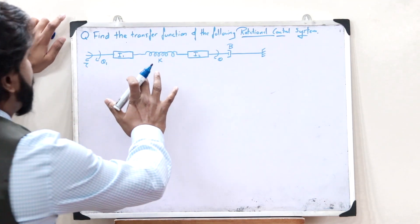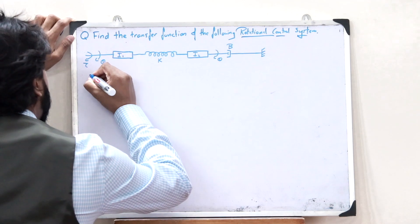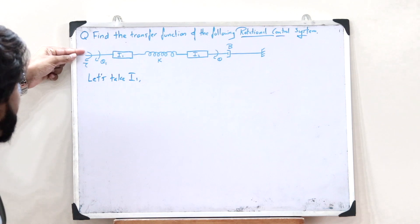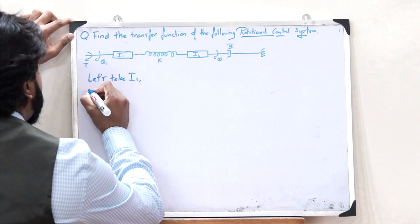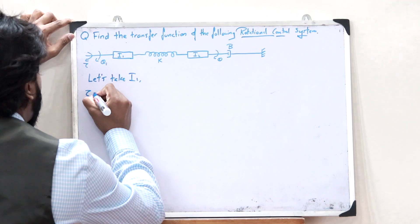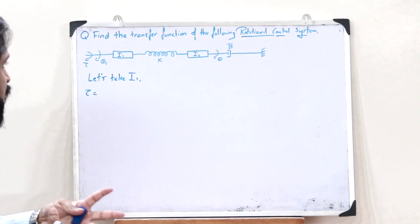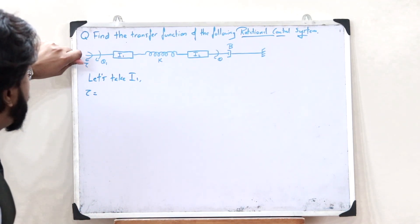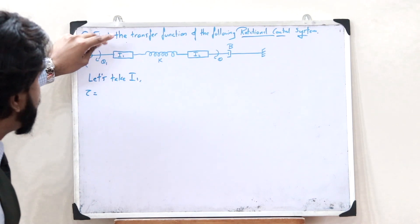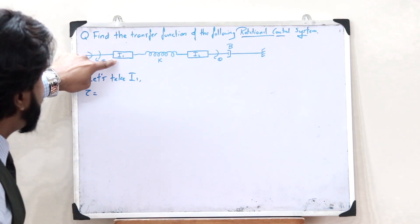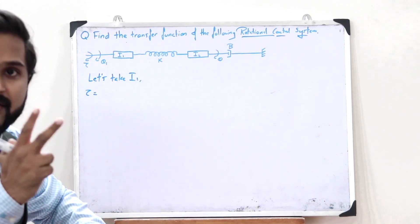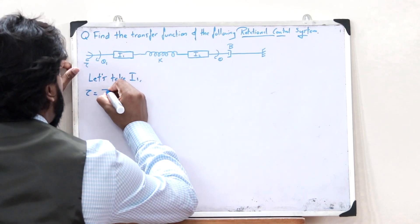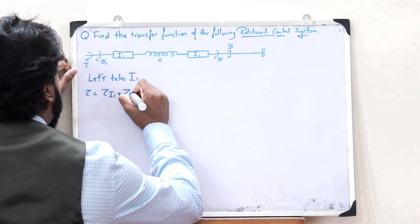First, let us consider this particular moment of inertia I1. In the case of I1, what we observe is that we have provided an external torque T. Here we have an external torque T which is equal to the sum of the opposing forces or the sum of the retarding forces that are developed here. When we apply an external torque T here, the restoring torques that are developed are: one, because of this particular moment of inertia I1, and second, because of this particular spring K. So this is equal to tau because of I1 plus tau because of K.